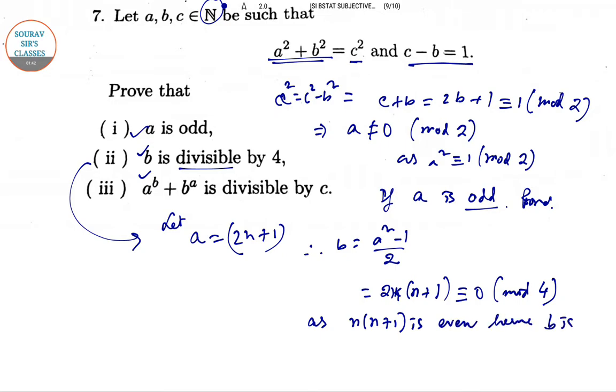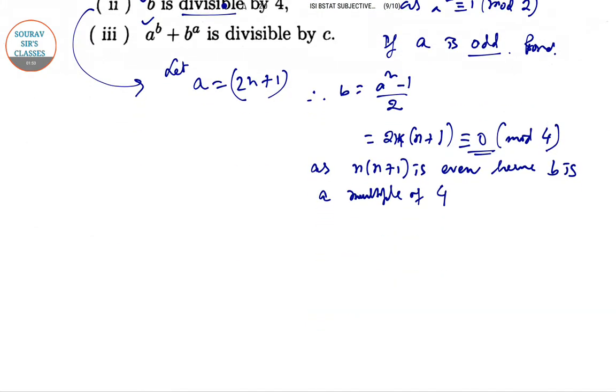Hence B is a multiple of 4, because this remainder is 0 modulo 4, as N into N plus 1 is even. So we can say it is a multiple of 4.